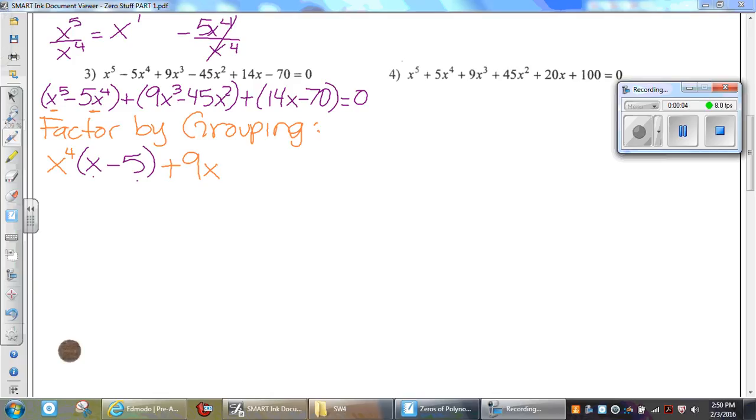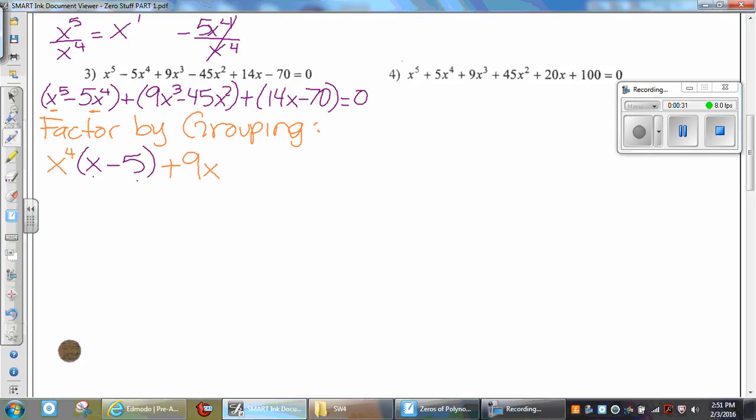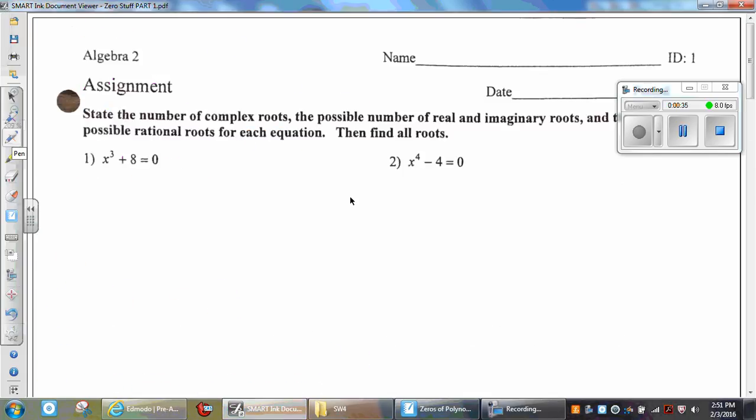The video will cover the second part of the handout titled zero stuff. At the beginning of class we went over the rules for factoring. Last class we were able to use sum of cubes and difference of squares to find the zeros of problems one and two, which are here.